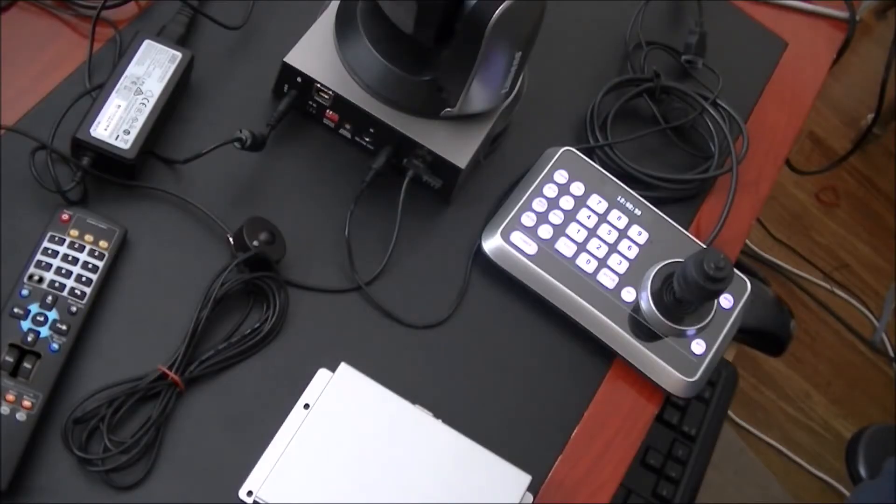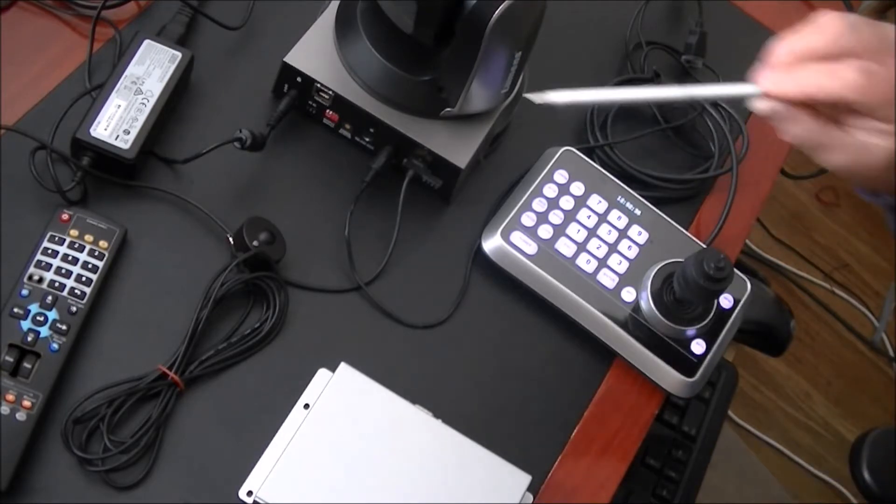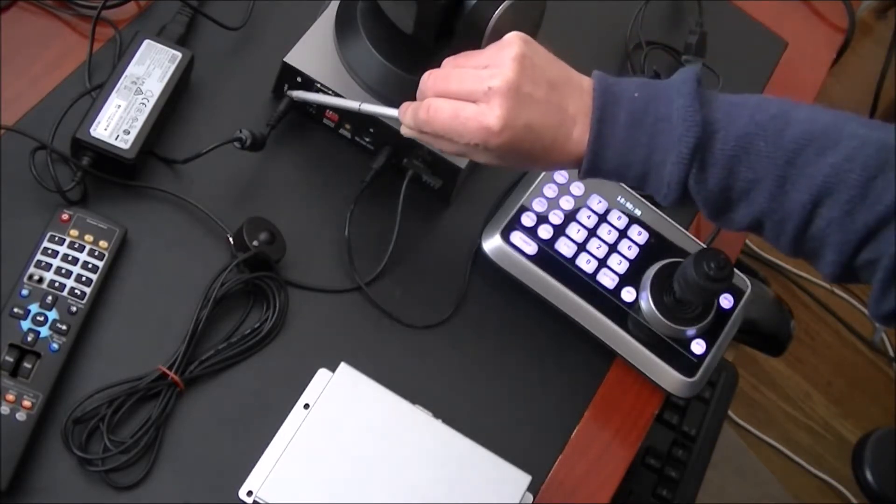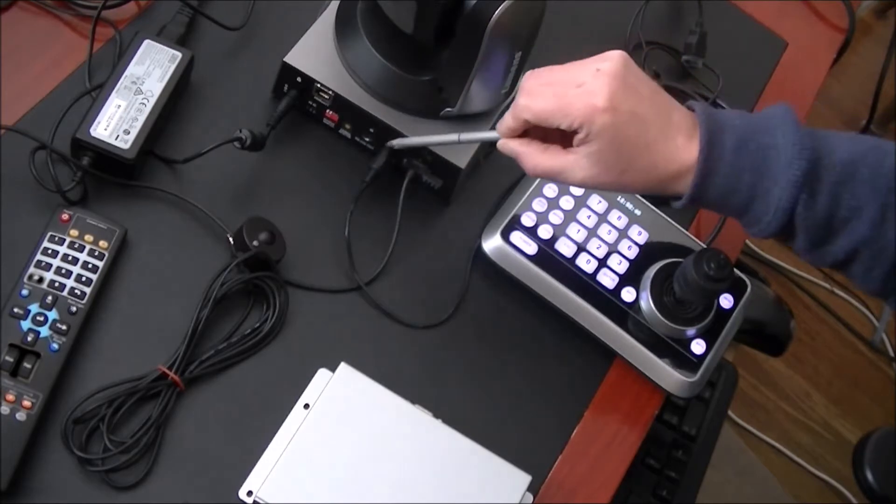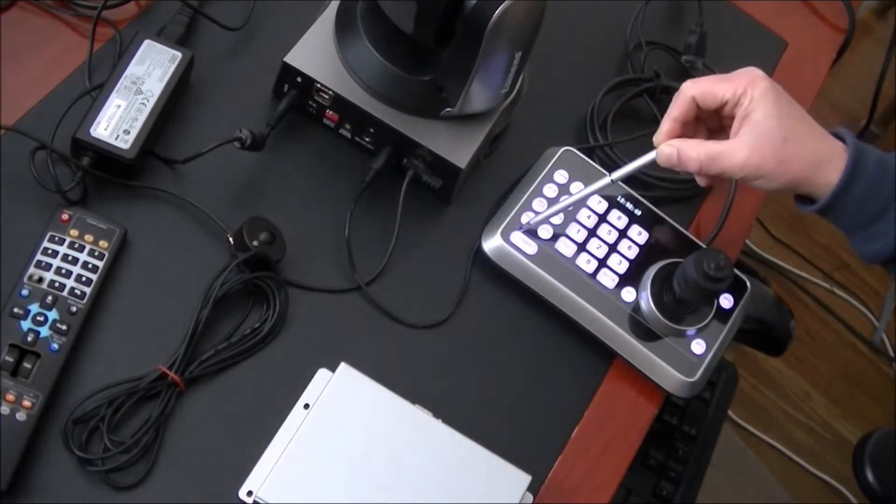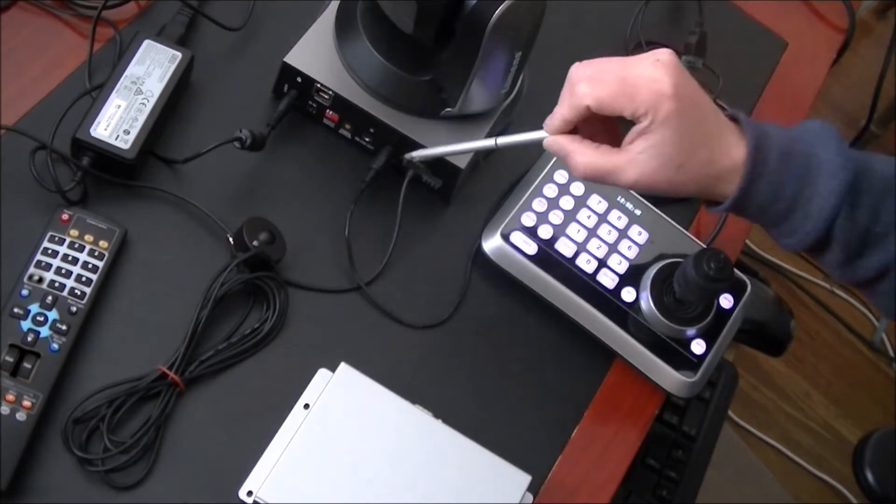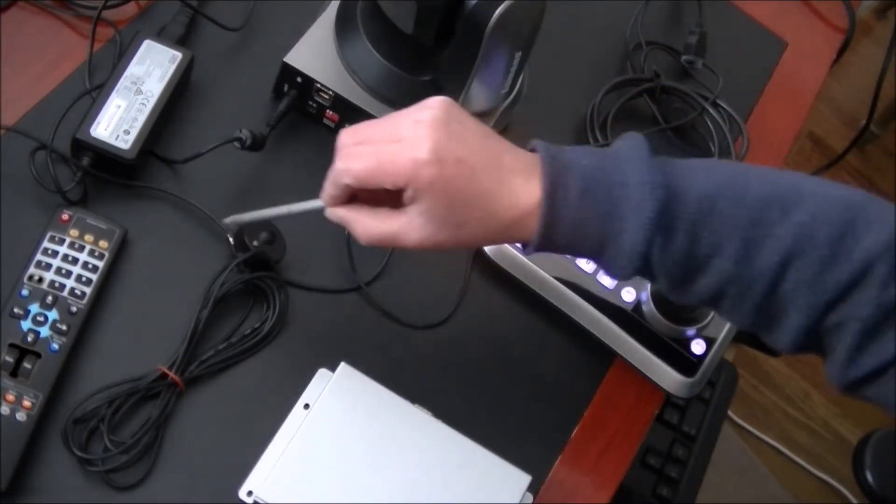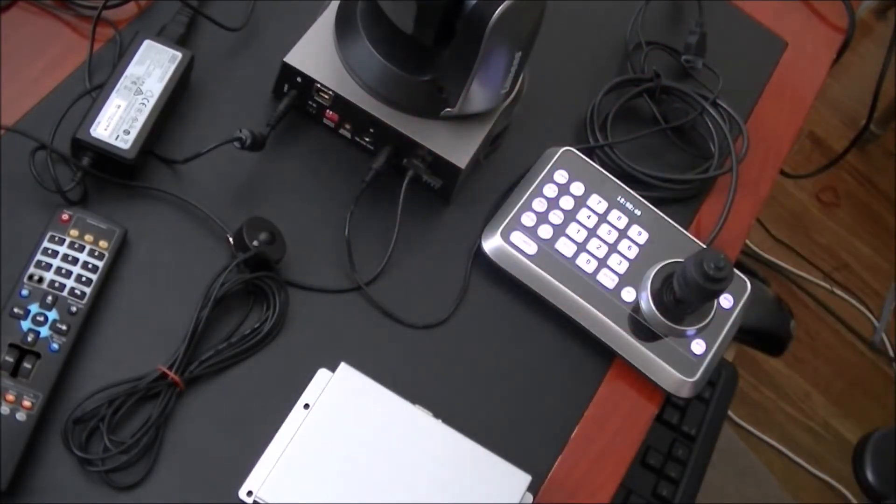Okay, so far our camera has three different wires: the power, we got the RS-232 controller which goes to the VISCA controller, and we got the HDMI cable which goes into our capture card.